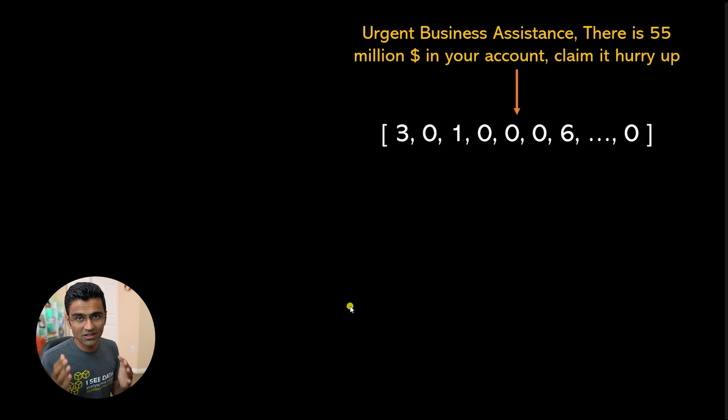Basically machine learning models they understand numbers, they don't understand text. That's the reason you need to convert text into numbers and these numbers are often a vector and this is called a vector space model.